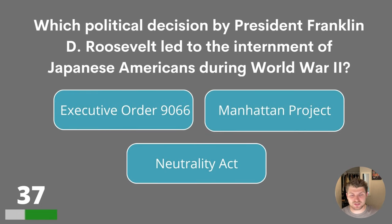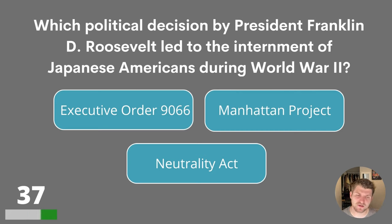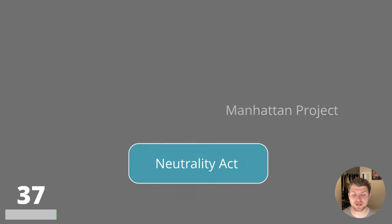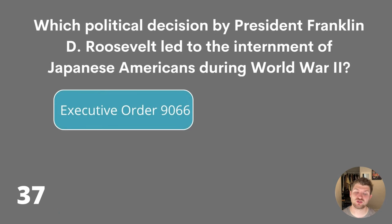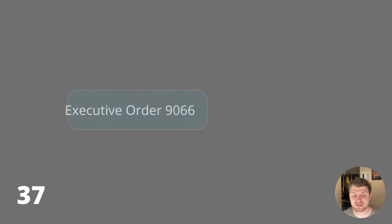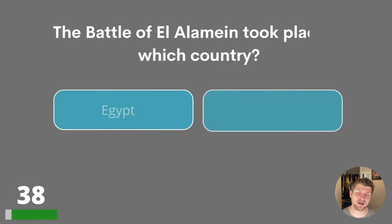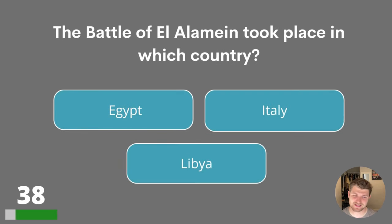Question thirty-seven. Which political decision by President Franklin D. Roosevelt led to the internment of Japanese Americans during World War II? Executive Order 9066, Manhattan Project or Neutrality Act? The answer is Executive Order 9066.